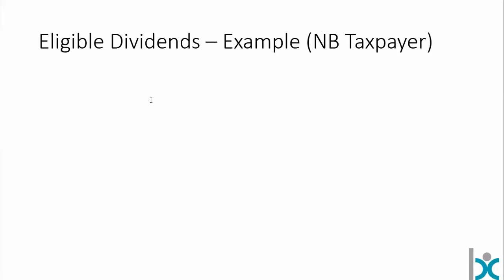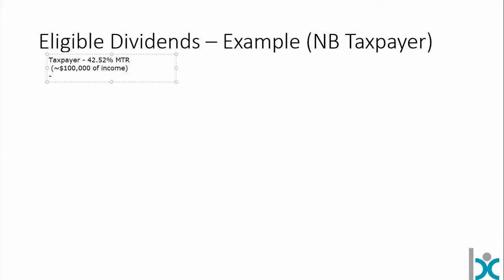We're going to work with an example of eligible dividends, and in the next video we'll move to non-eligible dividends. You may need to review the last video to help make the distinction between eligible and non-eligible dividends, although we'll talk about a little bit of that here as well. We're going to have a New Brunswick resident taxpayer at a 42.52% marginal tax rate — that's about $100,000 of personal income.